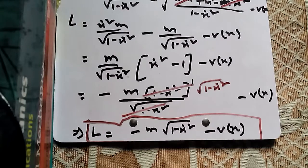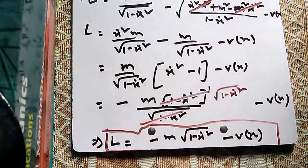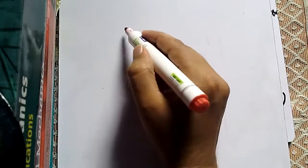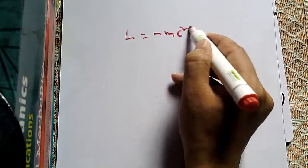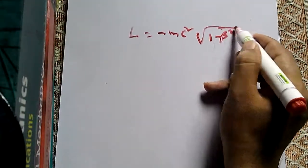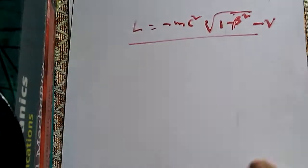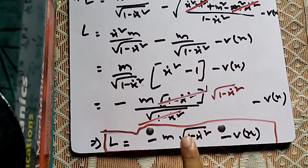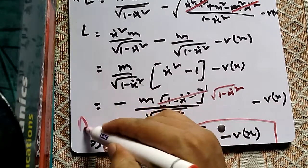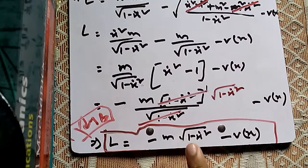For a single relativistic particle, the Lagrangian has a standard form: L equals -mc²·√(1 - β²) minus V. Our result is also in this standard form, confirming that B is the correct answer. Thank you.